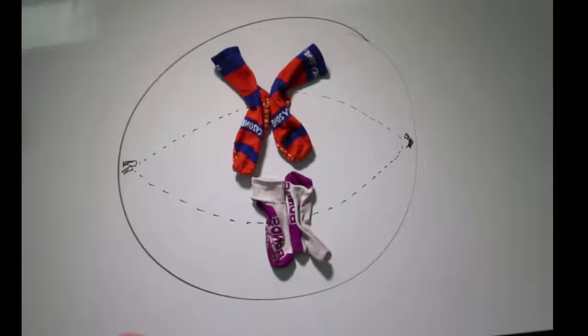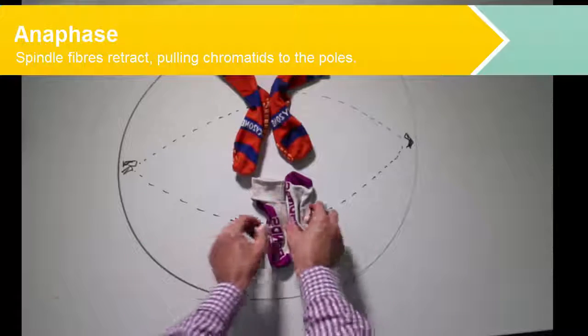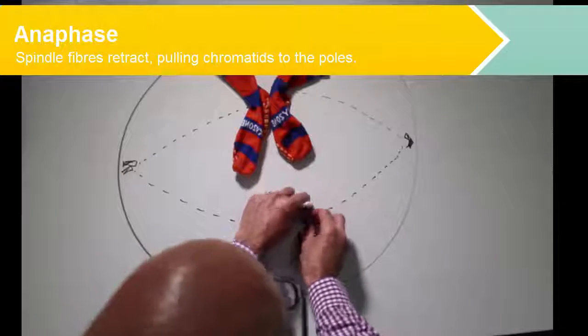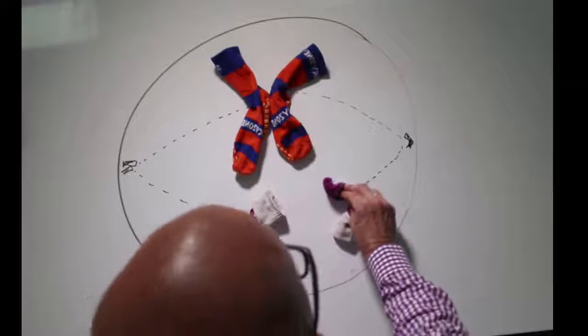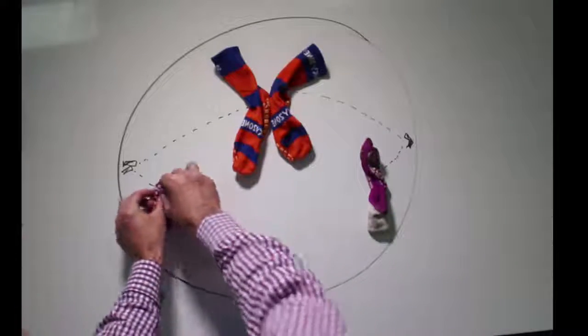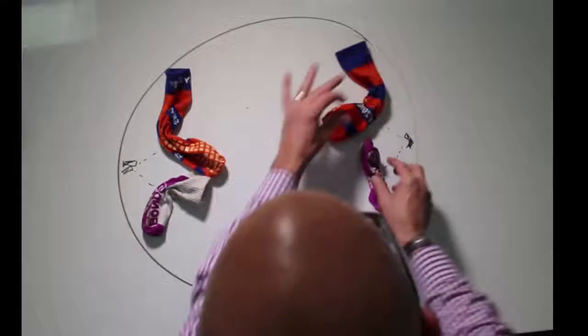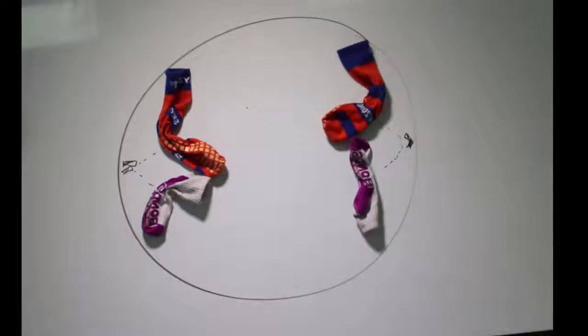In anaphase these spindles retract and our chromatids are retracted off towards the poles like this. So at the end of anaphase it looks like this.